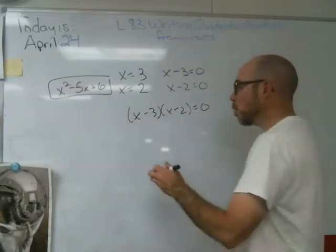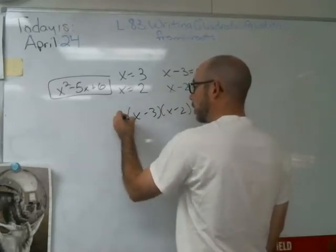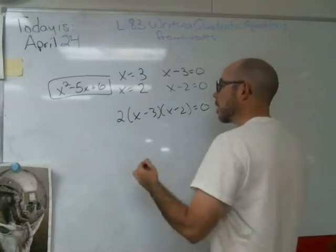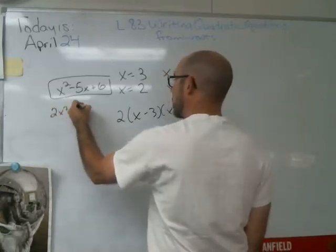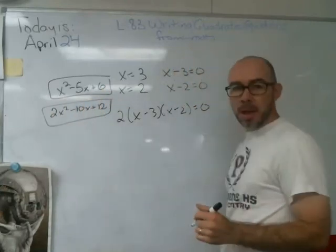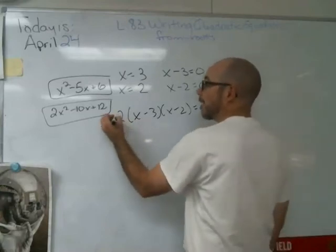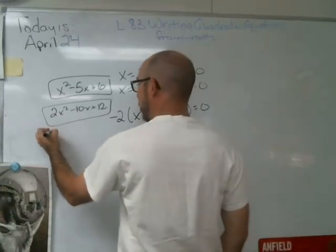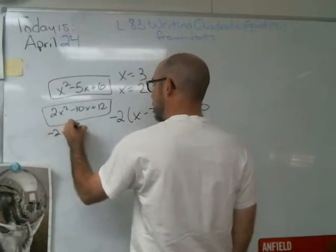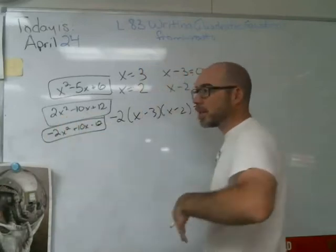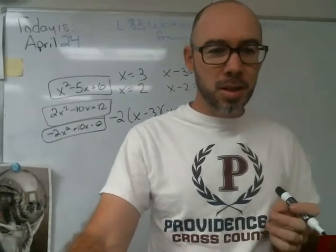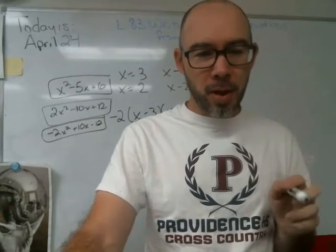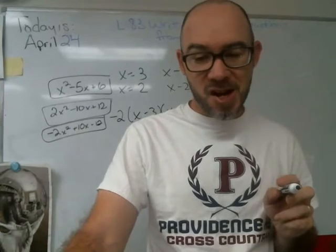That gives us one equation: x squared minus 5x plus 6. But what if there was a 2 that got divided out? Then we'd get 2x squared minus 10x plus 12. Another option: use negative 2, giving negative 2x squared plus 10x minus 12. We can keep going. Let's graph those three on the calculator and see that they all have the same roots.